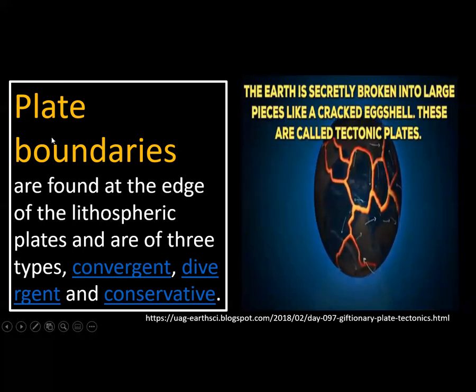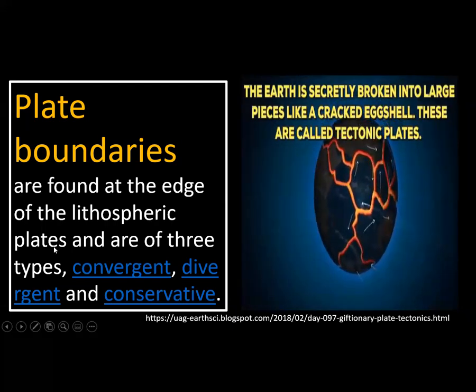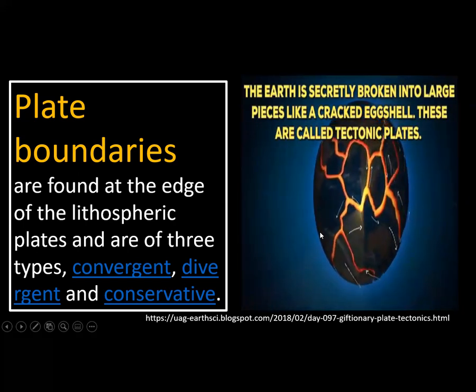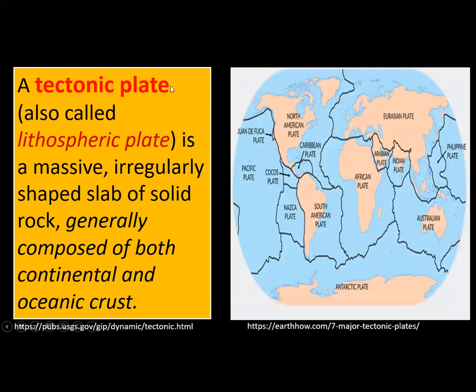Now, what are plate boundaries? Plate boundaries are found at the edge of the lithospheric plates, and there are three types. The tectonic plates are continuously moving because they float on top of the mantle, which is very hot molten rock. The convection current happening there causes the tectonic plates to continue moving in different directions. The place where two tectonic plates meet is called the plate boundary.